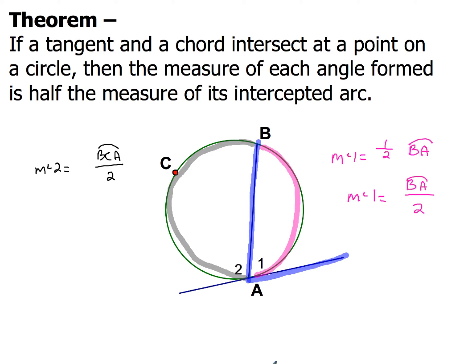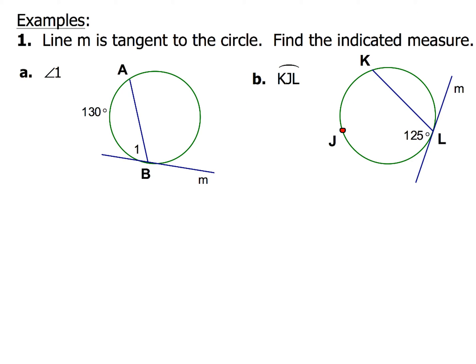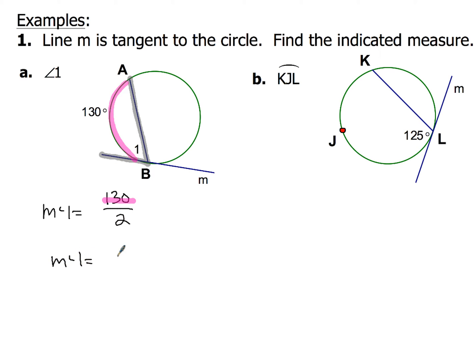I'm going to use both of these to help me work through two examples. Line M is tangent to a circle — find the indicated measure. Angle number one is right here. My intercepted arc is right here. So to find angle one: the measure of angle one is going to be half of that 130, so 130 divided by two. That works out evenly — so the measure of angle one is just 65 degrees. Make sure you put your degree symbol on that.